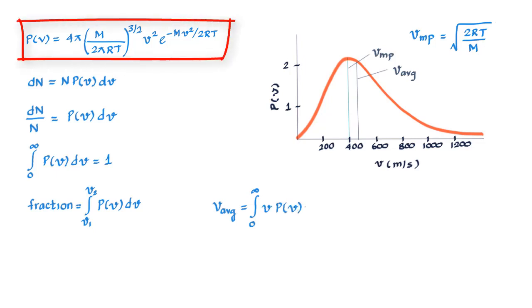So if we use this formula for P(v) in this equation, what we find is v average equals root of 8RT upon pi M and this is called the average speed.